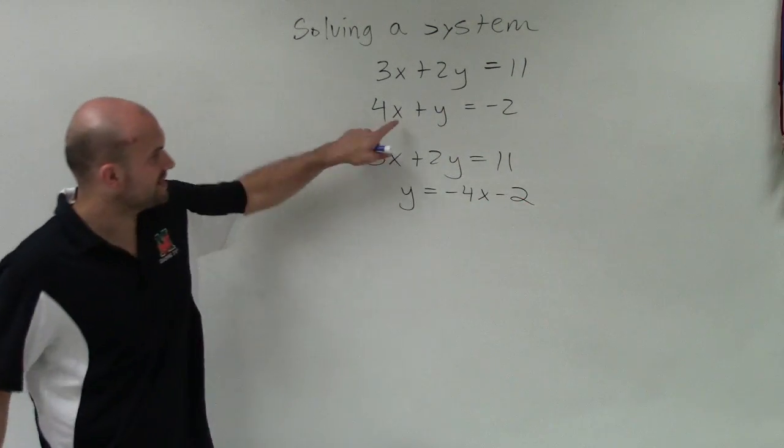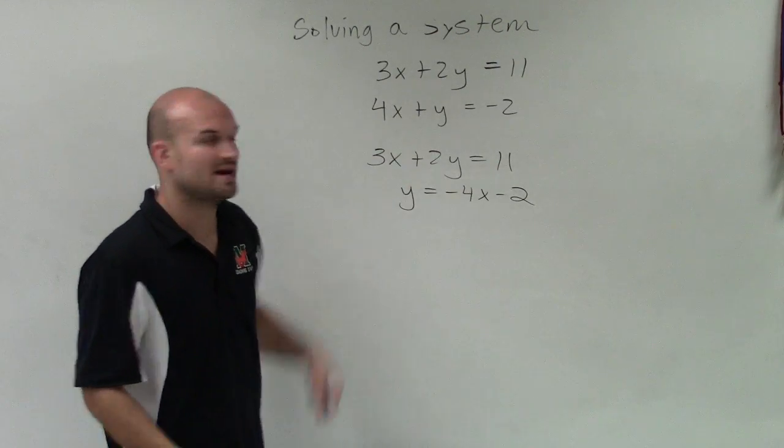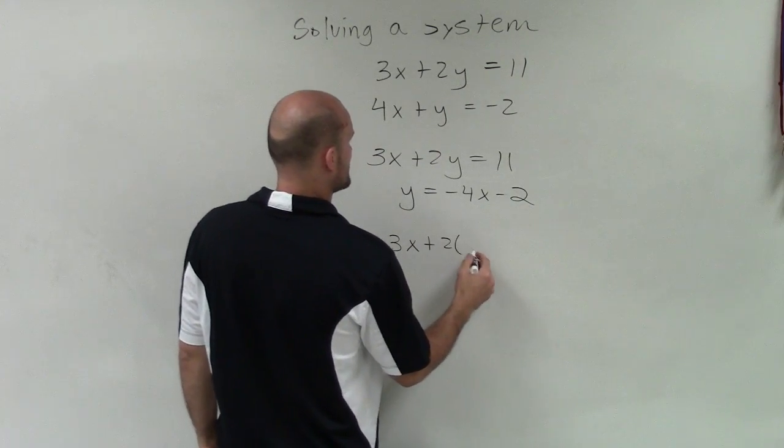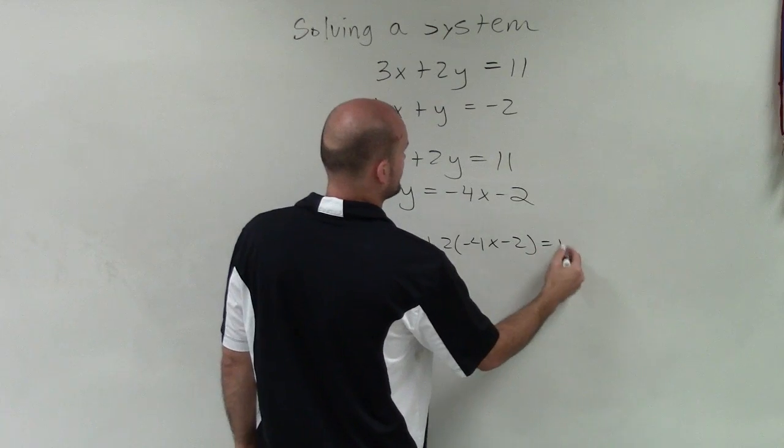So what I did was I solved for this y. Then I'm now going to plug in my value of y into my other equation. So therefore, I have 3x plus 2 times negative 4x minus 2 equals 11.